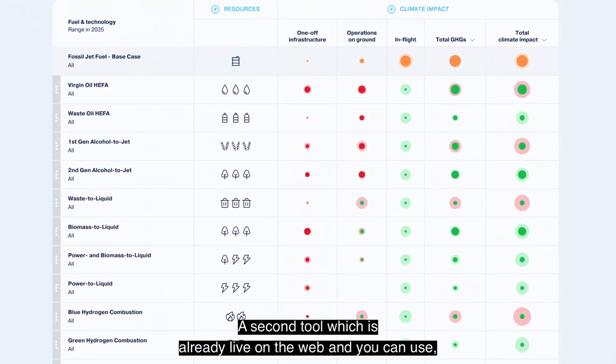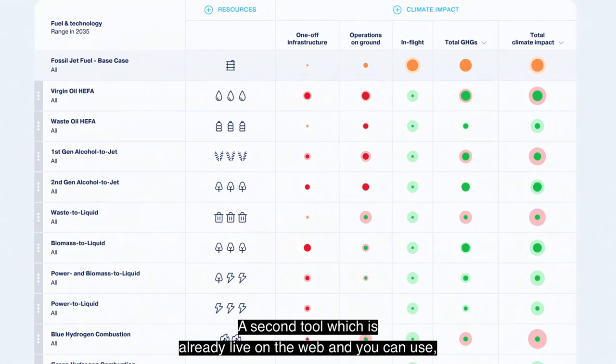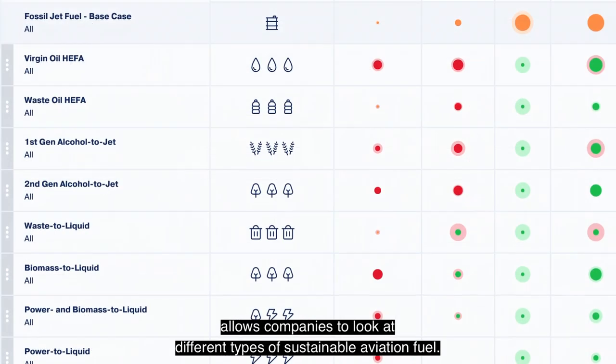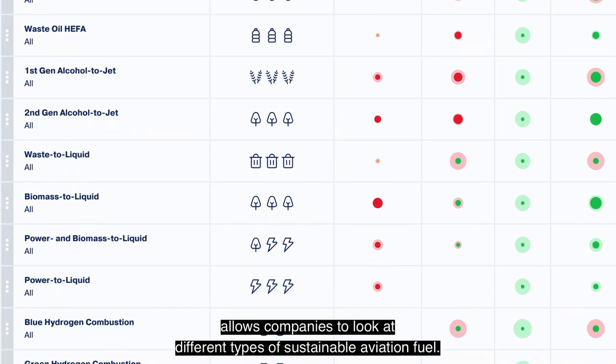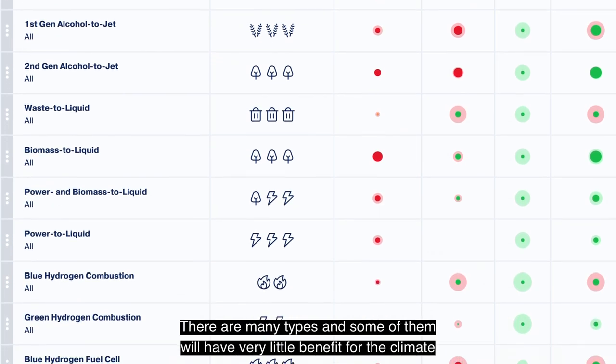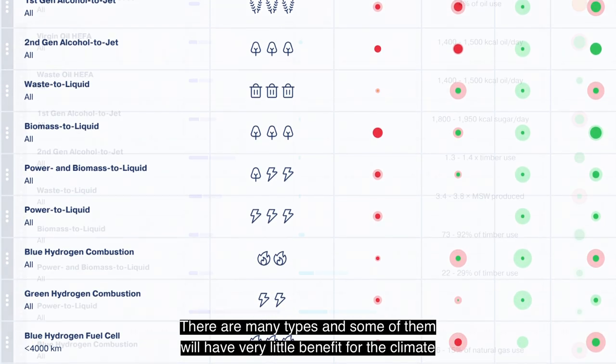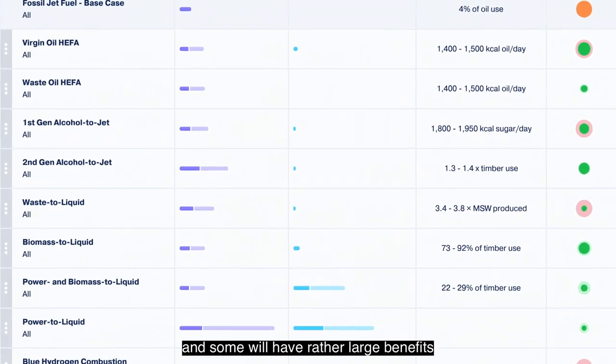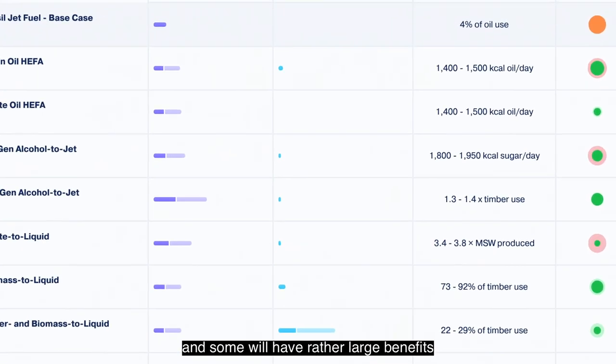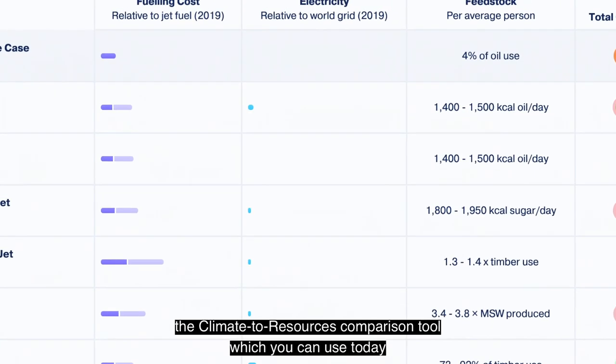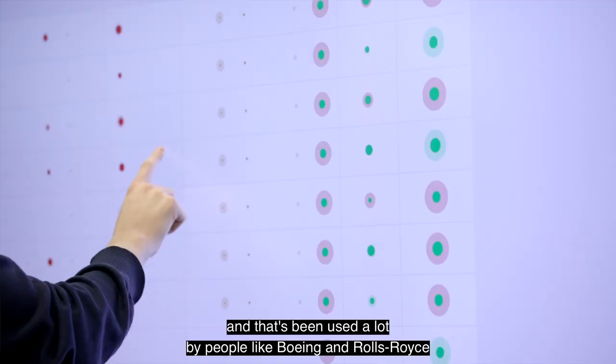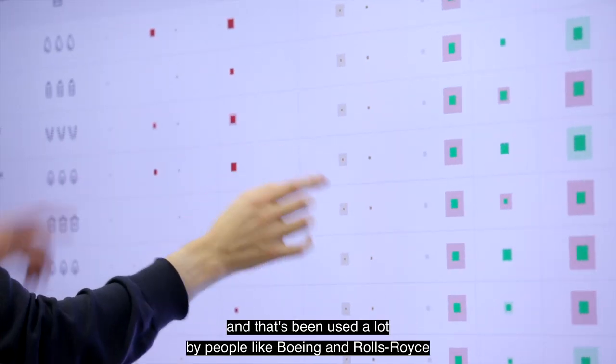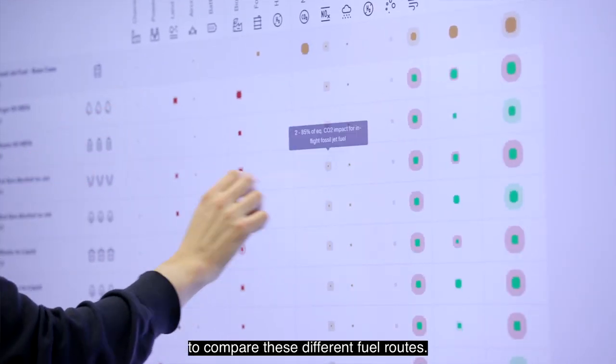A second tool, which is already live on the web and you can use, allows companies to look at different types of sustainable aviation fuel. There are many types, and some will have very little benefit for the climate, and some will have rather large benefits. We have a comparison tool, the climate to resources comparison tool, which you can use today. That's been used a lot by people like Boeing and Rolls-Royce.